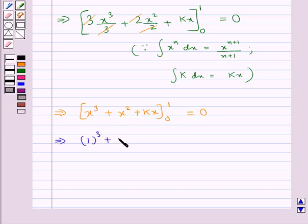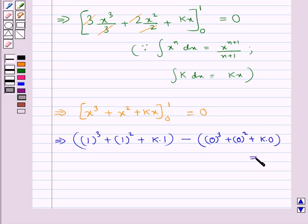Now putting the upper and lower limits, we get 1 cubed plus 1 squared plus k times 1, minus 0 cubed plus 0 squared plus k times 0. This equals 0.